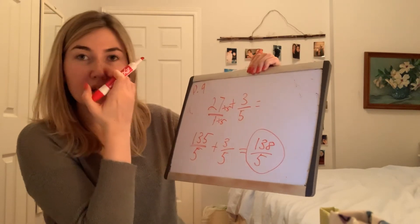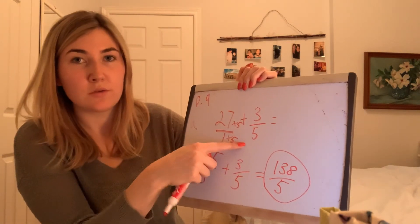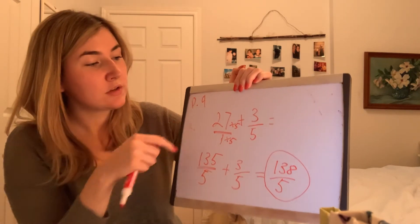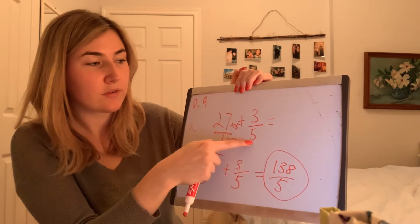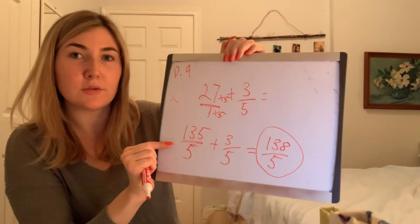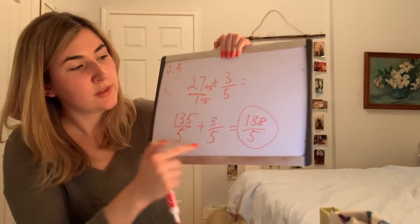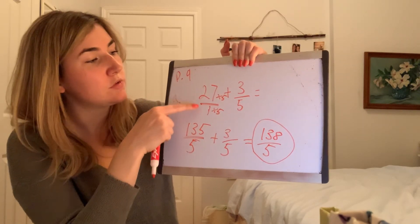You'll be doing B by yourself. Remember, we can't add a whole number to a fraction — we first have to change our whole number into a fraction. A whole number is always on top of a 1. We change our bottom number to match whatever fraction we're adding, and whatever we do to the bottom, we do to the top. Rewrite it so you're adding two fractions and then get your answer. Finish up B for part 9, pause this video, and come back once you're all finished.